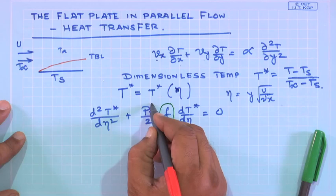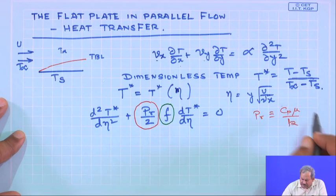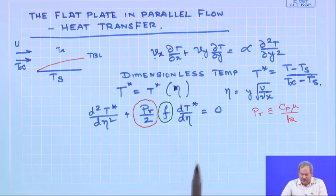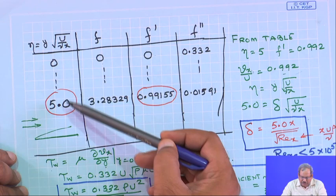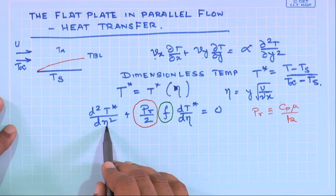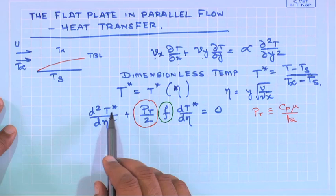The second thing to note is the appearance of Prandtl number Pr, defined as C_p·μ/k, where C_p is the heat capacity, μ is viscosity, and k is thermal conductivity. Since the values of f for different values of η are already known from the hydrodynamic solution table, f as a function of η is known. Therefore, if Pr is specified, I should be able to numerically solve for T* as a function of η.